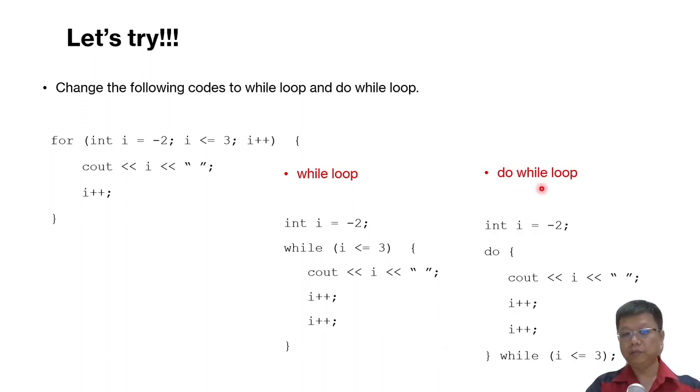Next, we have do while loop. Maintain the initializations part. Move the condition and the while to the bottom part of this loop. Replace it with do. So this is how we get a while loop, do while loop, and for loop. And again, when you run this code, basically it will give you same result. So I hope you will try later on.